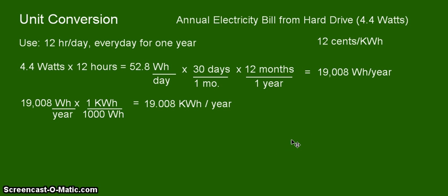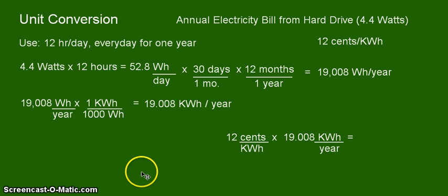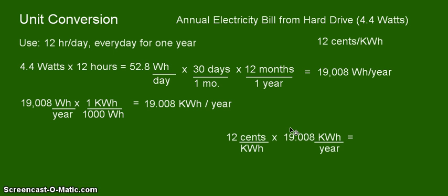All we need to do is simply use this rate that we mentioned earlier — 12 cents is going to be the rate per kilowatt hour consumed. The rate is 12 cents per kilowatt hour, and the amount of electricity we used for the whole year was 19.008 kilowatt hours. So simply multiply 12 by 19.008 to get our annual electricity bill from your hard drive, and your annual electricity bill from your hard drive is 228.096 cents for the whole year — that's 228.096 cents.